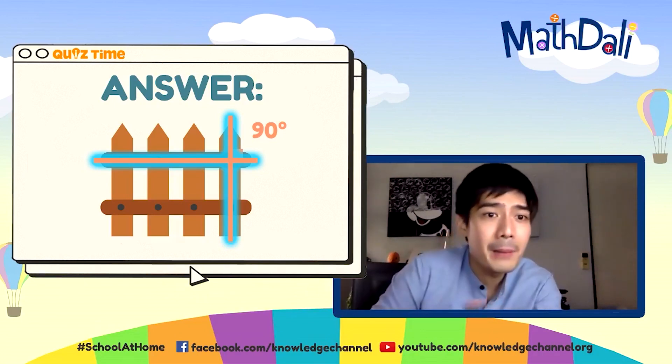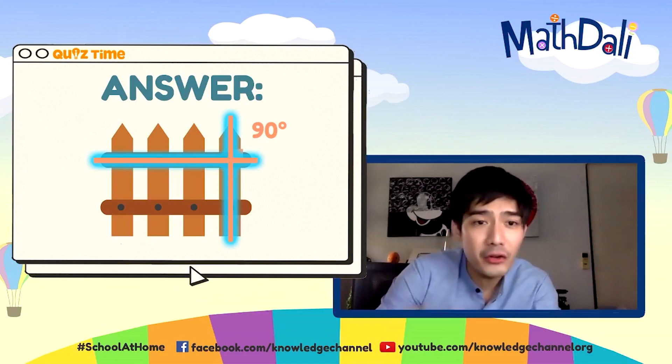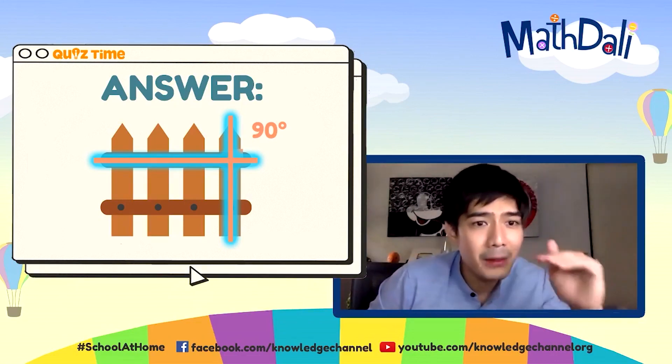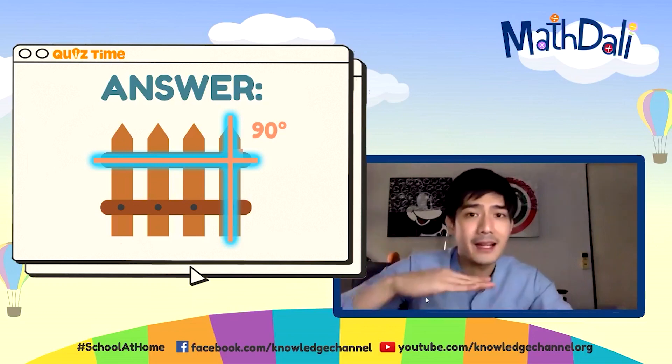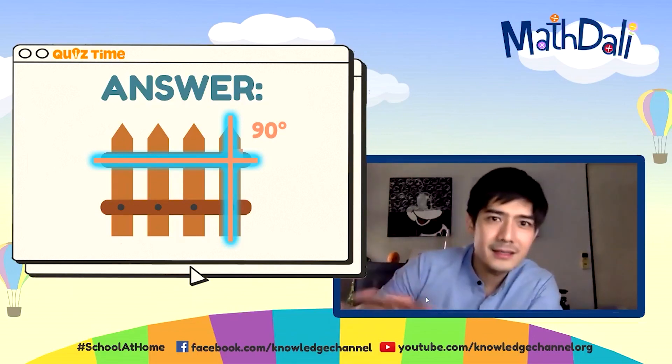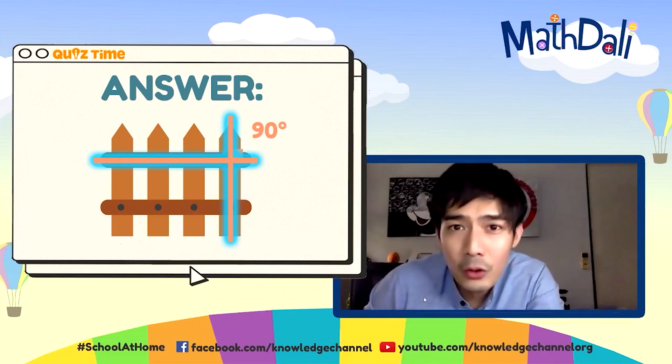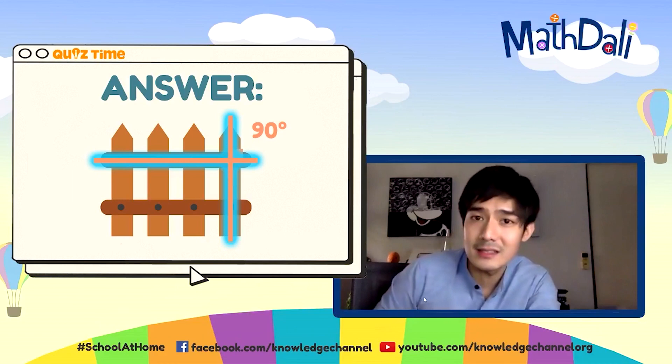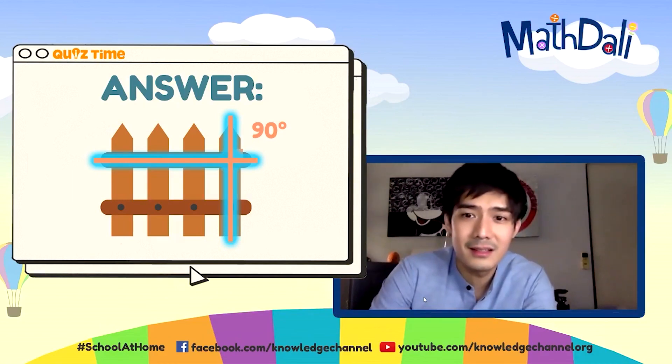May mga sumagot ng parallel. Totoo rin yan, pero hindi yun ang nakahighlight. Parallel lines, kapag yung brown na may dots, yun ang parallel lines. May mga sumagot ng intersecting lines. That is somewhat true. Pero, ang hinahanap talaga natin ay yung special kind of intersecting lines. Perpendicular lines. Ayan.